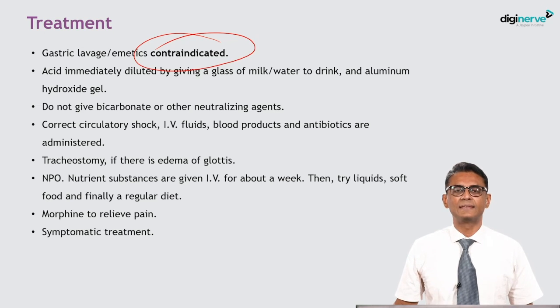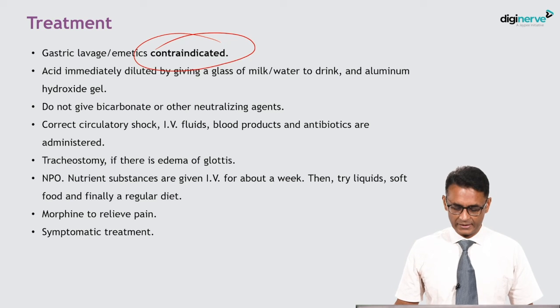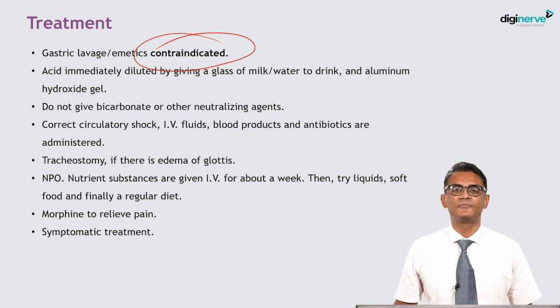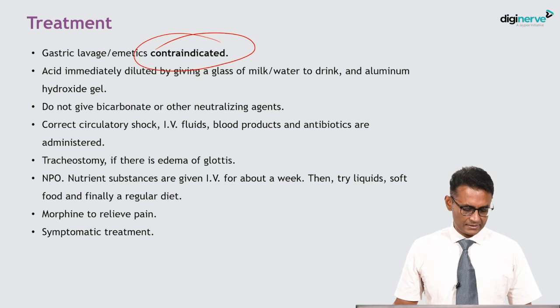NPO (nil per orally) is maintained, and nutrient substances are given IV for about a week. Then try liquids, soft food, and finally a regular diet. Morphine is given to relieve pain, along with symptomatic treatment as and when symptoms arise.